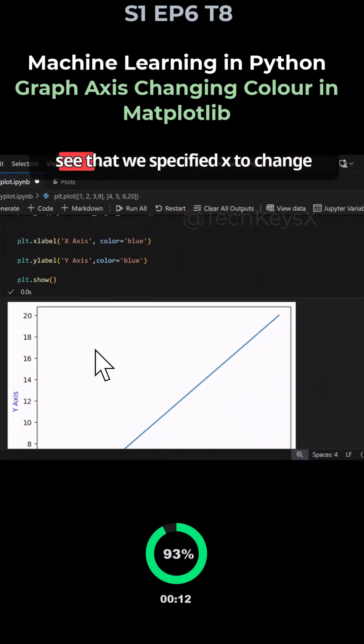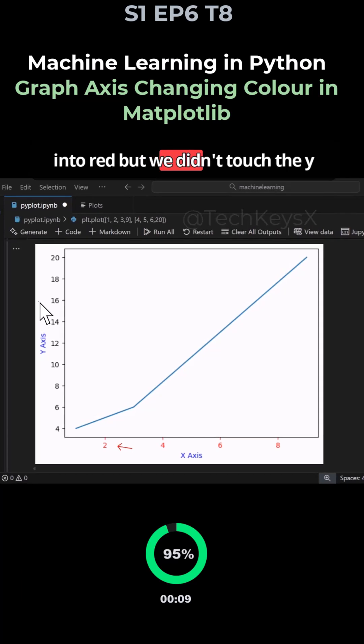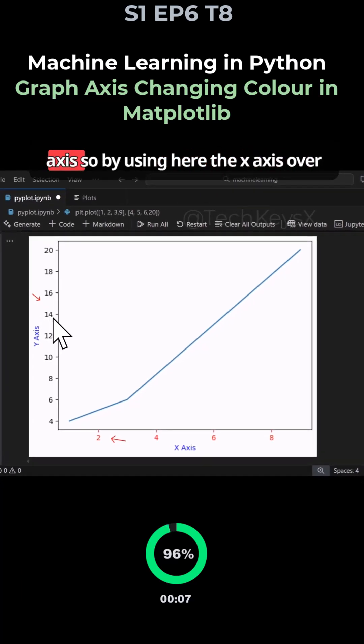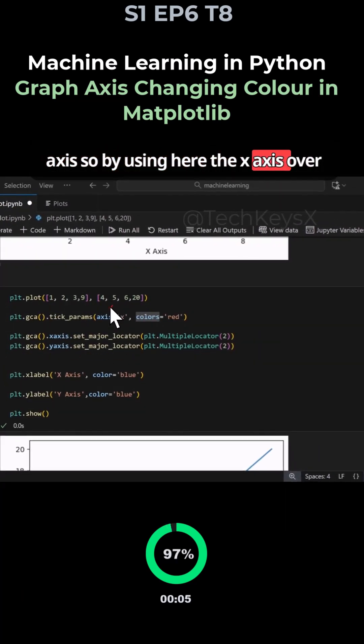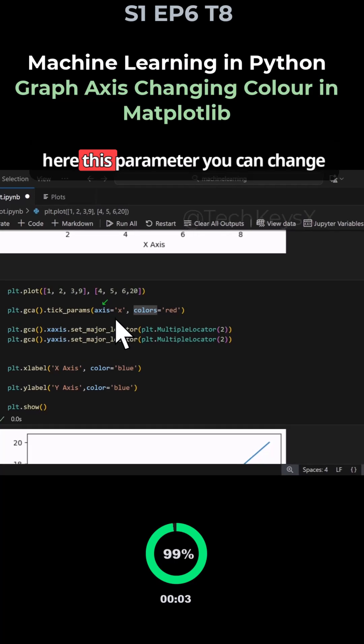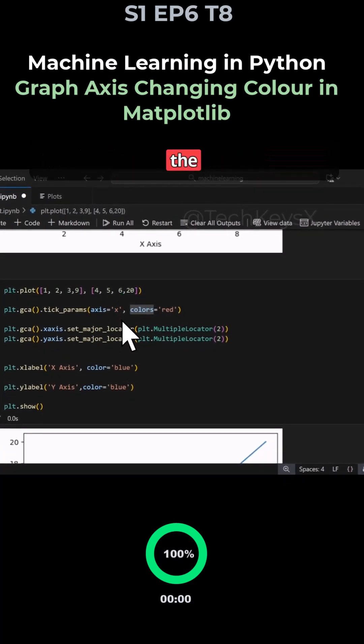By using here the x axis over here, this parameter, you can change the color.